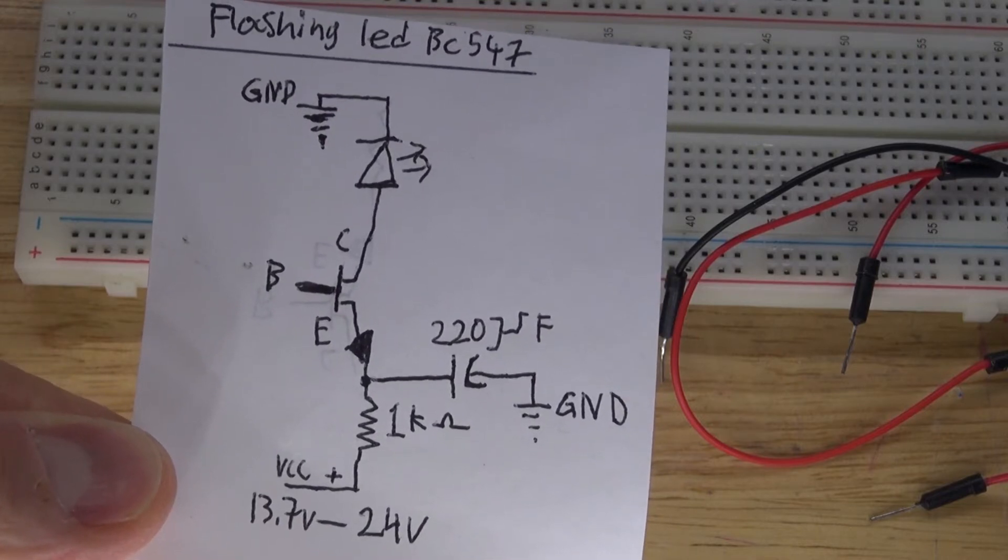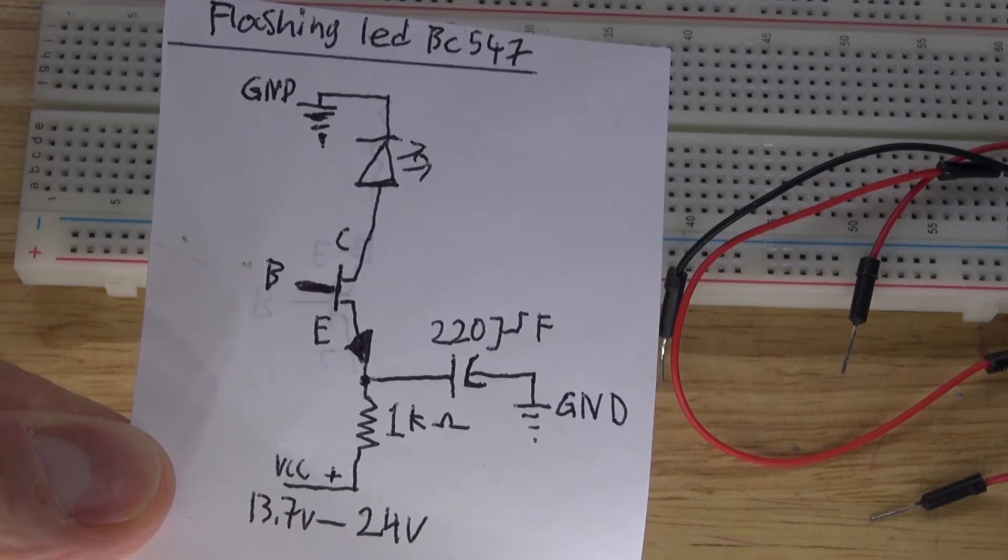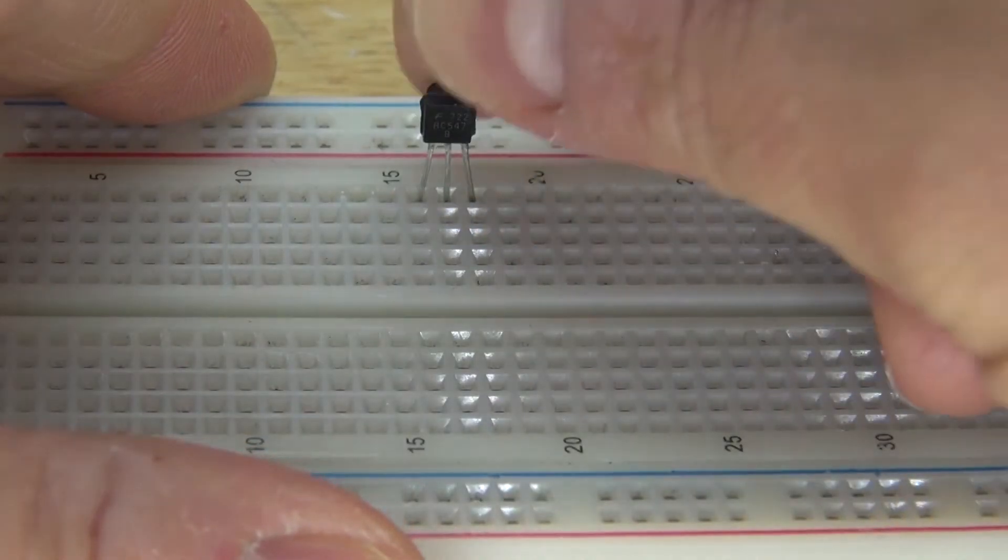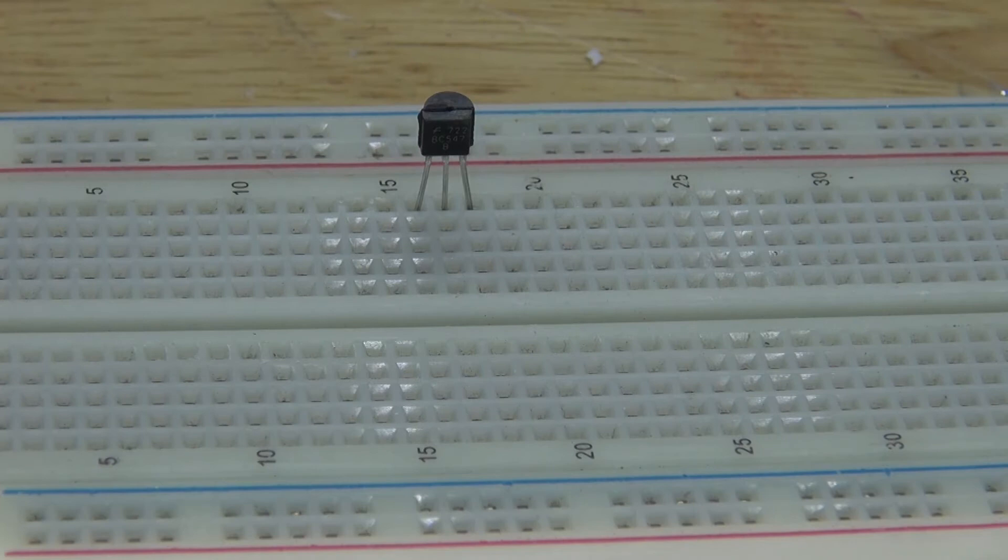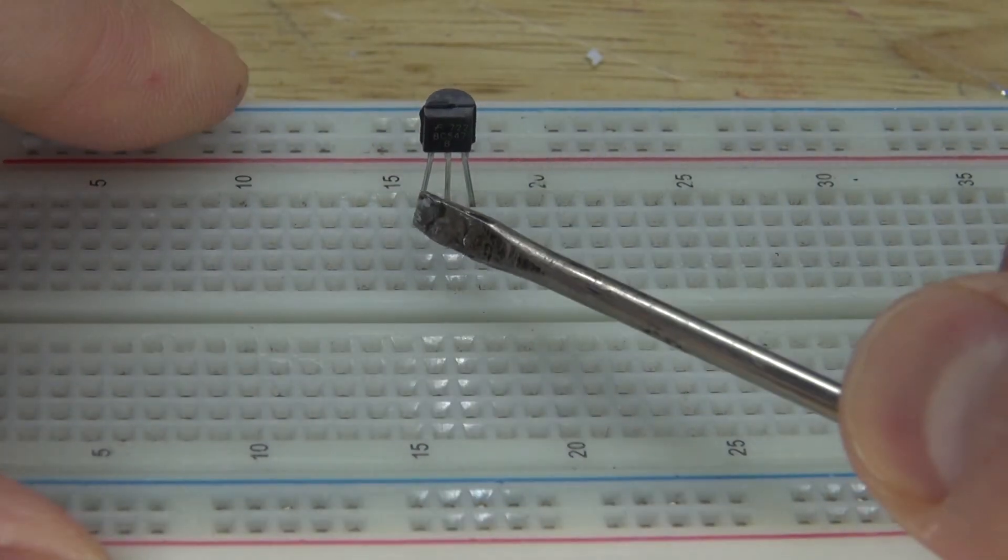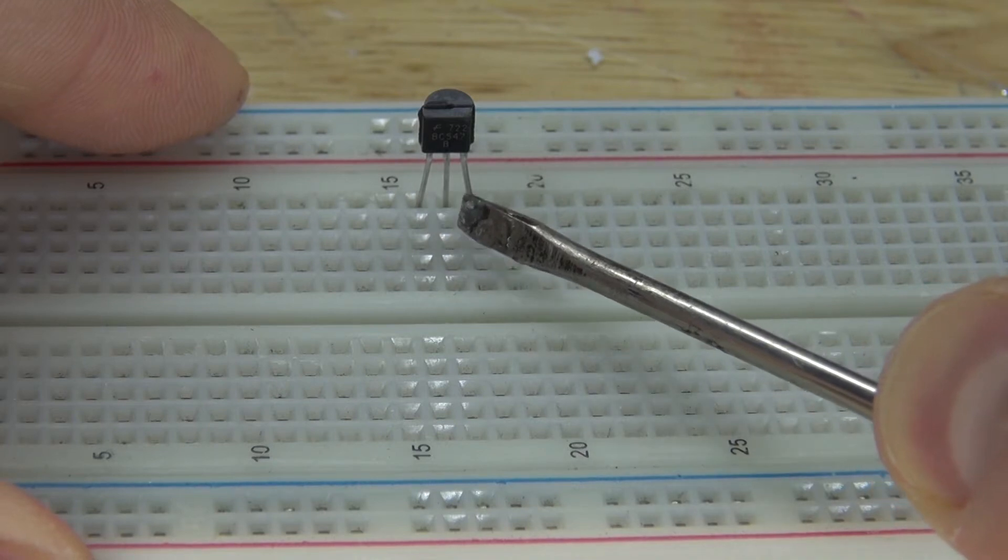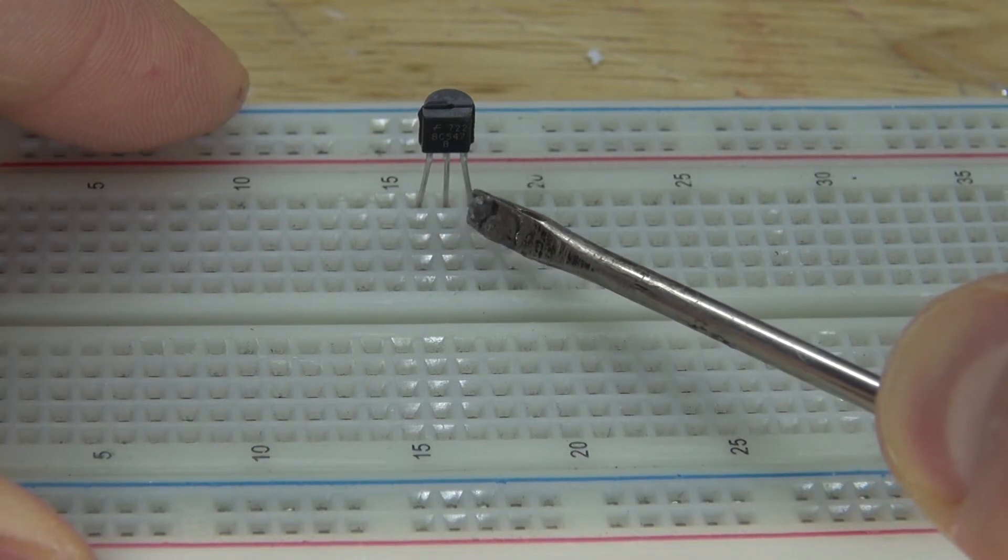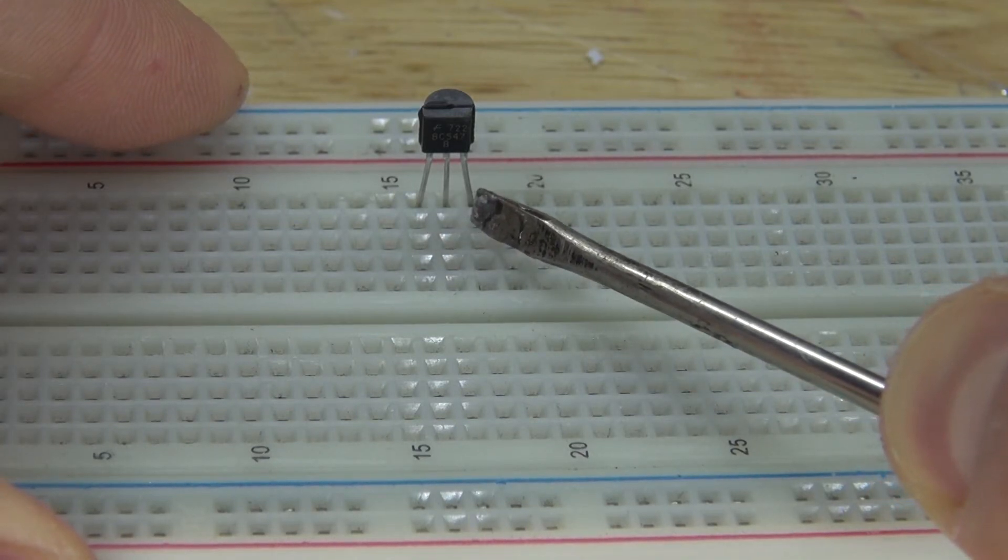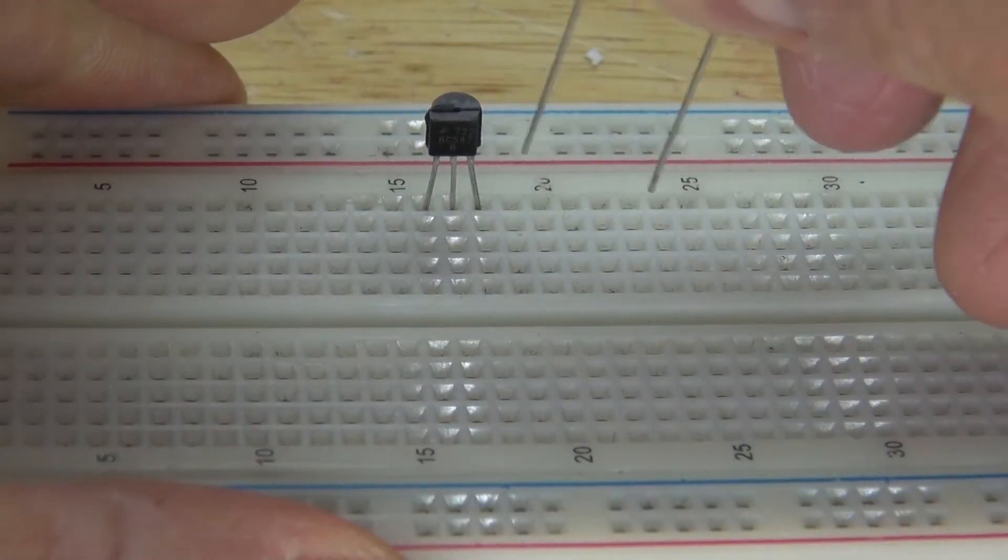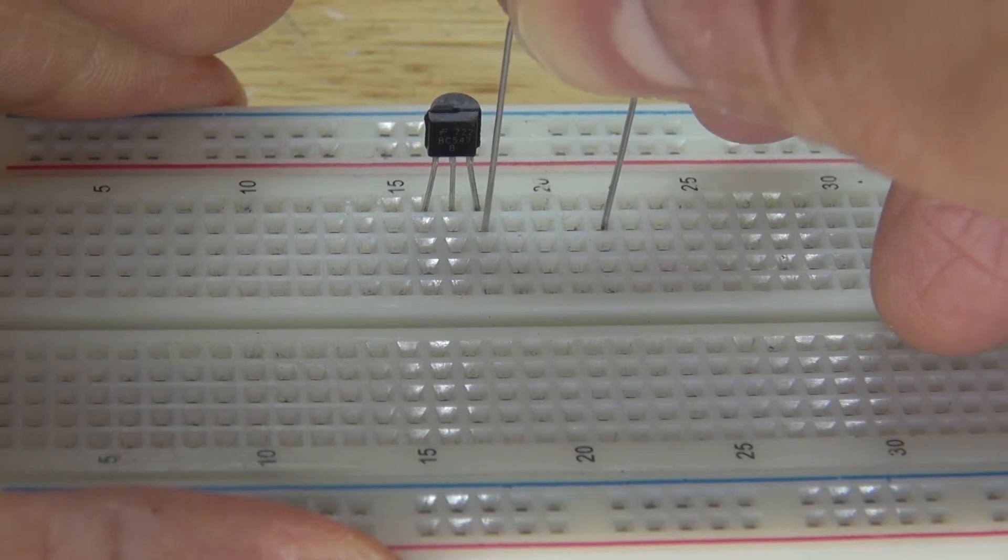First I'm going to take the BC547 transistor and put it into the breadboard. This pin right here is the collector, this pin here is the base, and this pin here is the emitter. Next I'm going to take this 1K ohm resistor and connect one lead to the emitter and the other lead free.